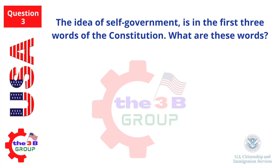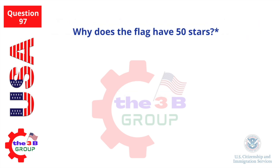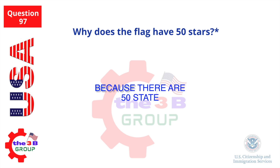The idea of self-government is in the first three words of the Constitution. What are these words? We the people. Why does the flag have 50 stars? Because there are 50 states.